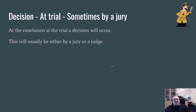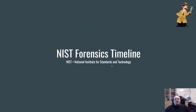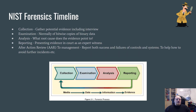A decision at trial is sometimes made by a jury, and you have no real impact on that. You can look at a forensics timeline to see how the process looked — for example: collecting, examination, analysis, and reporting. There are different step-by-step models available.